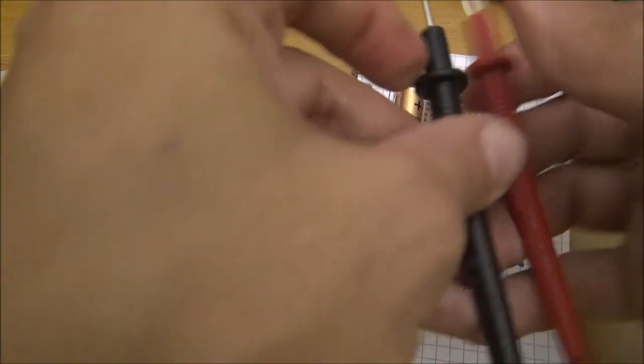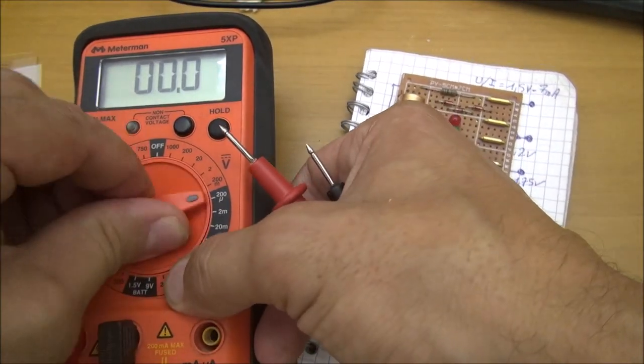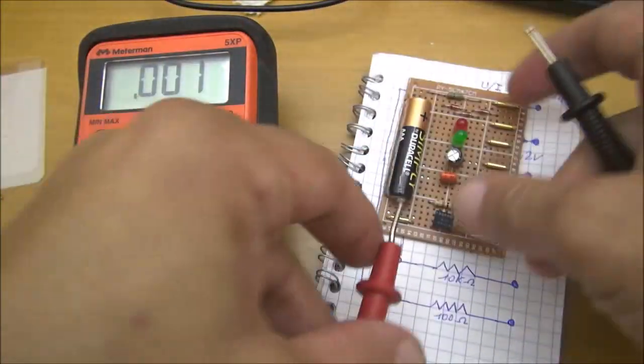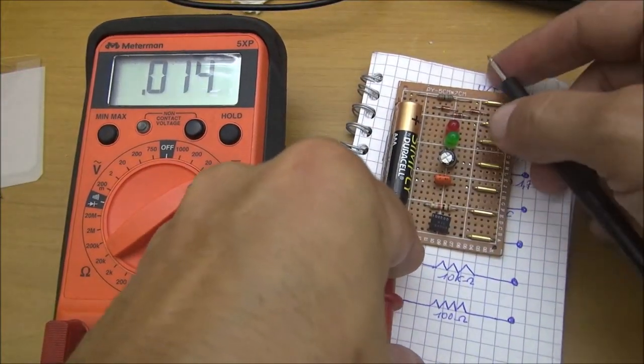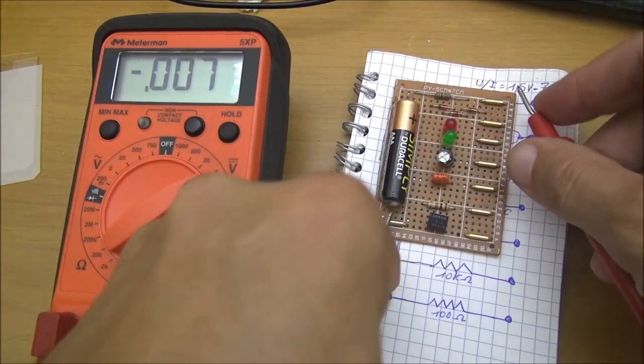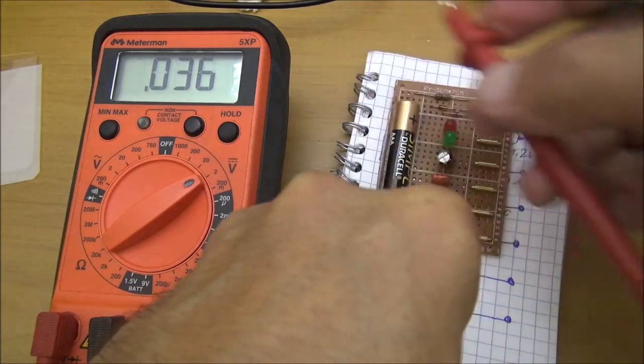Of course you can use it to check voltage. You put your caliber on 2 volts, it's enough to check your multimeter, and you have a voltage of 1.65 volts here.